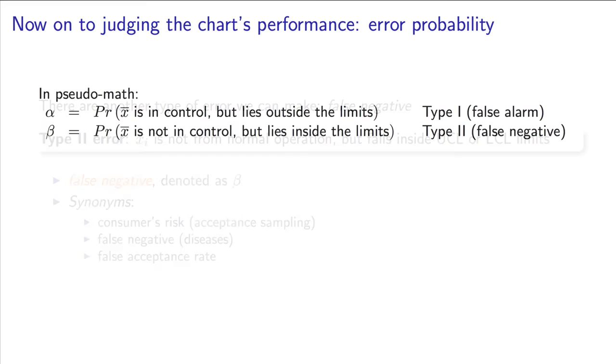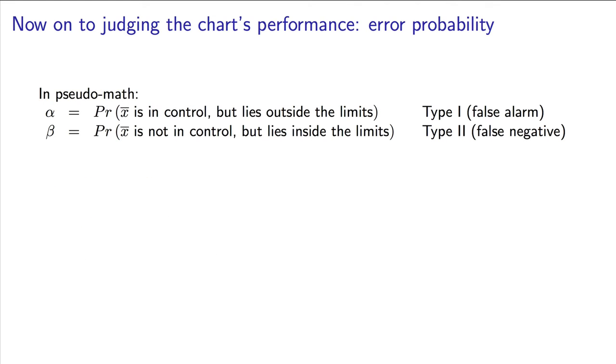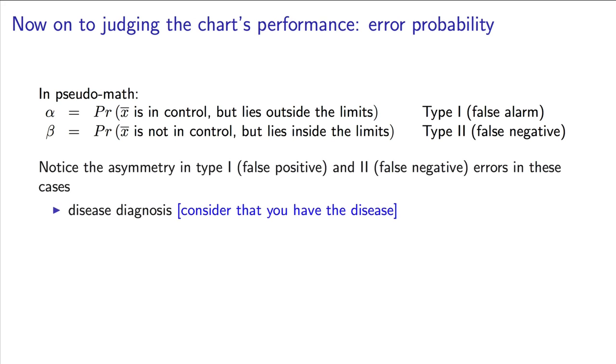Neither of these errors are desirable. A type 1 error raises an alarm where none exists. And a type 2 error does not raise an alarm when one should have been raised. I prefer to use the language of false alarms or false negatives. I do, however, want to point out how asymmetrical they are.